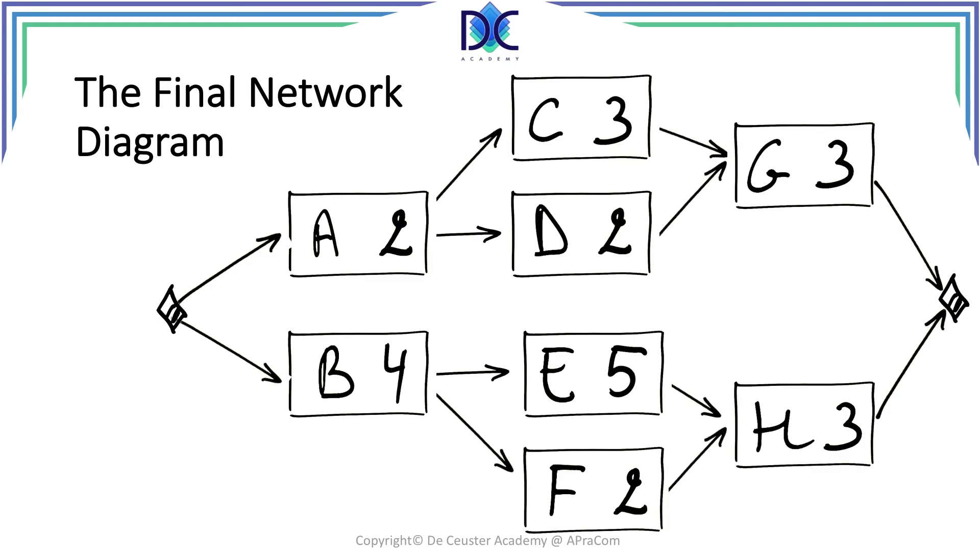The final network diagram looks like this. We have the start milestone. We have the tasks in the order, taking into account the precedence information, and we have the finishing milestone.